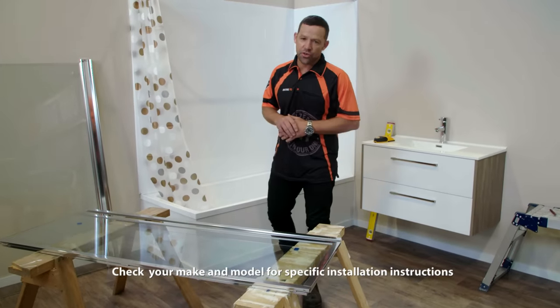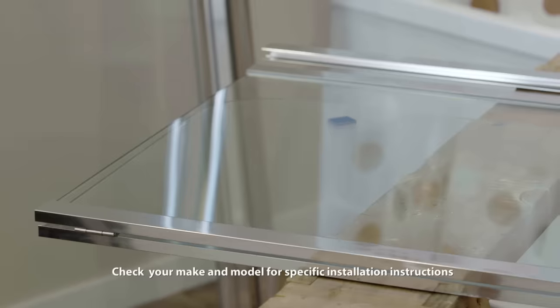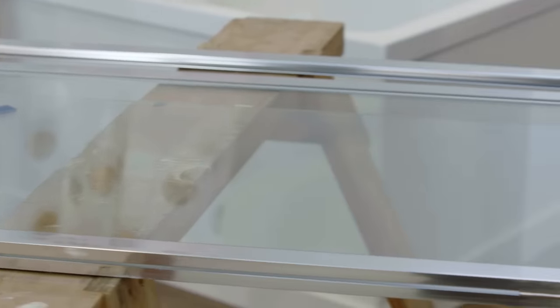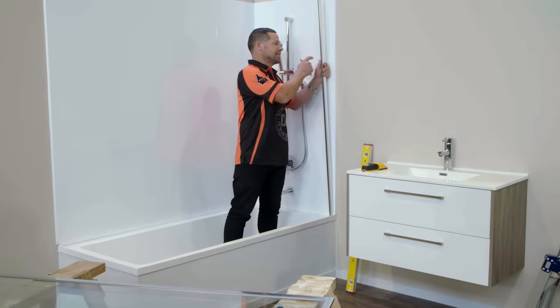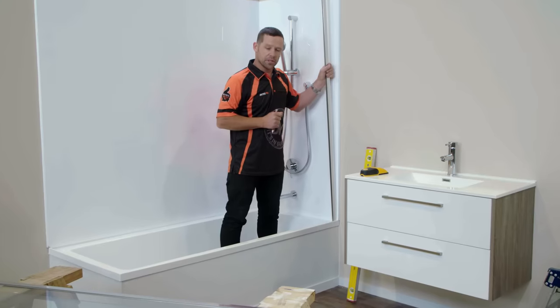There's a number of different bath screens that you can install over your bath. What I'm going to install today is a fixed panel with a swinging door. So the first thing we have to do is attach our aluminium channel to the wall. That's what our fixed panel is going to slot into.